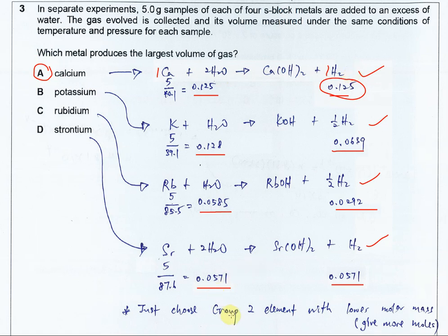Again, if we want to compare the group 1 and group 2 if they are in the same period, we better choose the group 2 elements because it's always able to form one more of hydrogen gas when it's reacted with H2O.